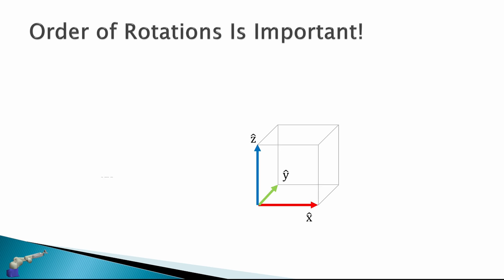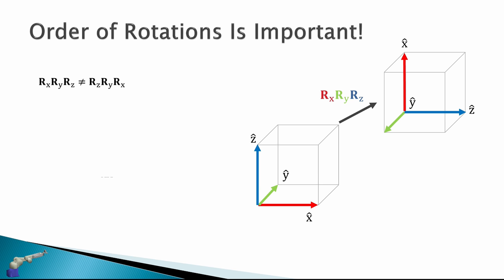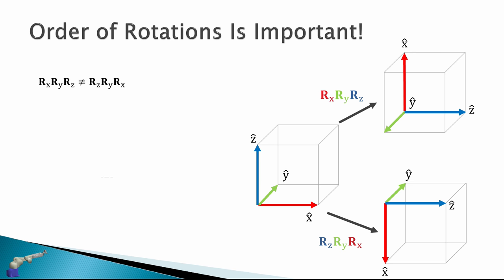One important consideration is that the order of rotations is extremely important. Rotating about X, then Y, then Z is not the same as rotating about Z, then Y, then X. If I take a reference frame and rotate about X, Y, then Z, I end up in one orientation; but if I rotate about Z, Y, then X, I end up in a completely different orientation. This is because matrices are not commutative.